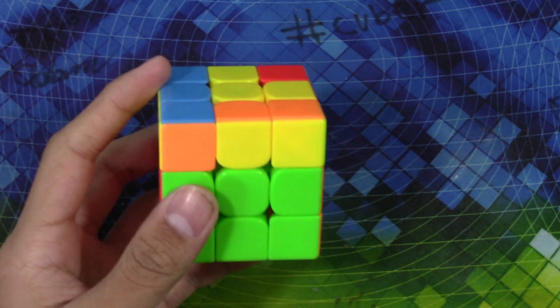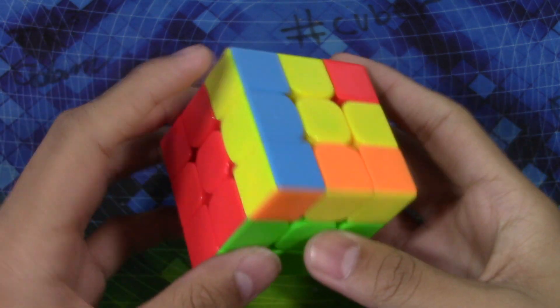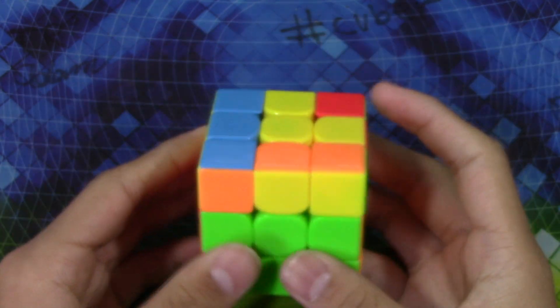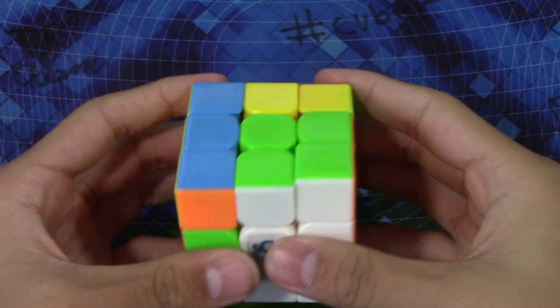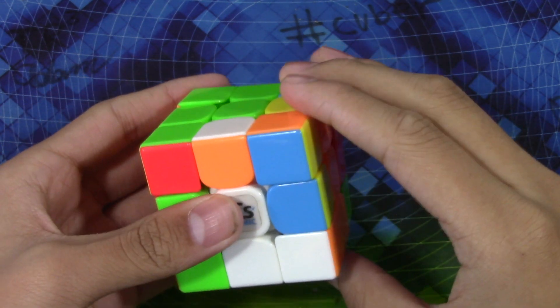You want to hold it the same way you would hold the COL like this. So the alg goes like this: it's just a wide R U D prime R U R prime D R2 U prime R prime, and then U prime.